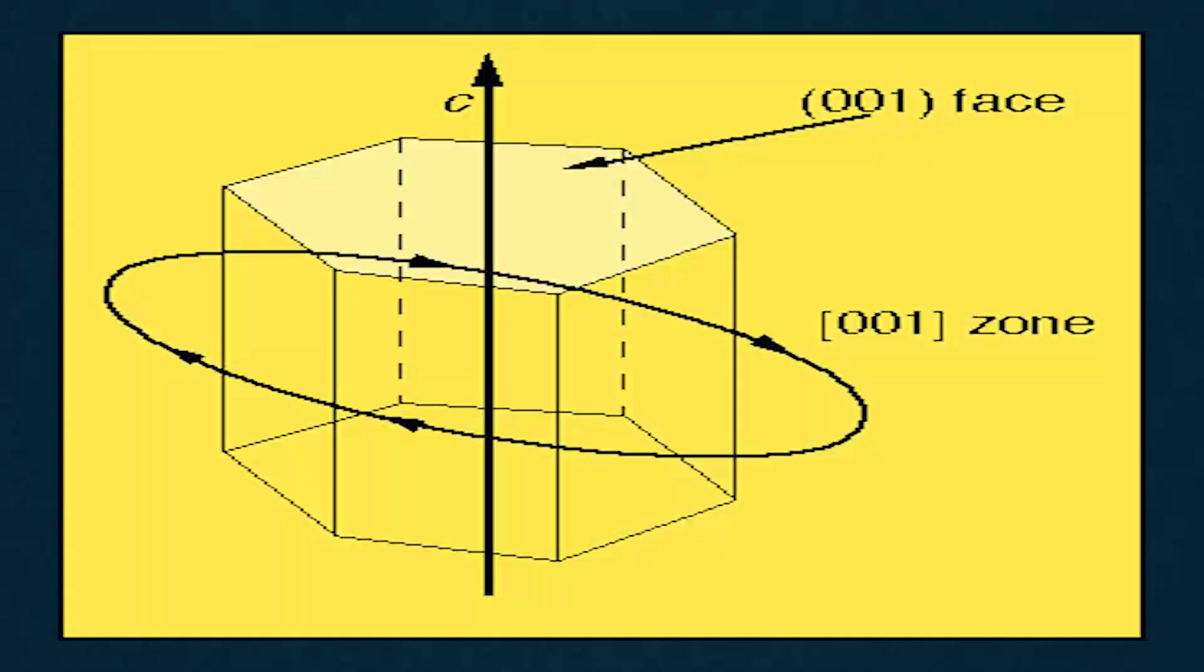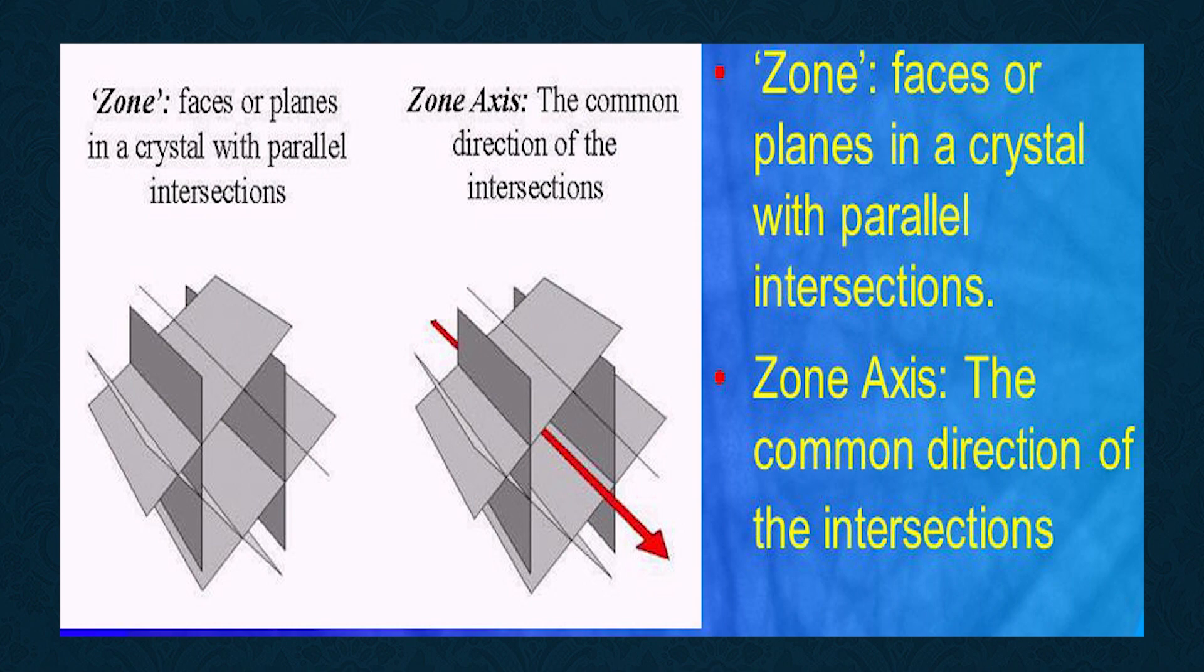In crystals, the faces are so arranged that the edges formed by the intersection of faces are parallel. Each such set of edges belongs to a group of faces, set by faces whose mutual intersection gives rise to parallel edges belonging to a zone. One imaginary line is chosen within a crystal to which the set of parallel edges of a zone are all parallel. The common direction of all these edges is the zone axis. In a crystal, there may be many zones and zone axes.